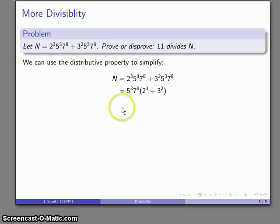I can pull out the common factor of 5 to the 3rd, I can pull out the common factor of 7 to the 8th. What's left over? 2 to the 3rd, 3 to the 2nd. Now I have 5 to the 3rd times 7 to the 8th times this thing.